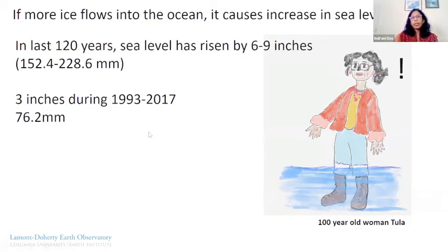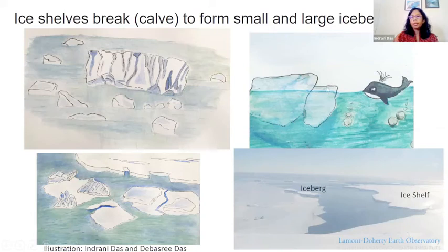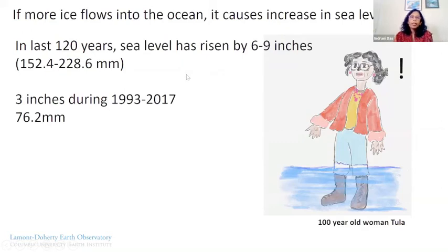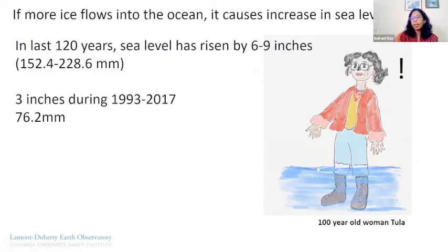Ice will melt and go to the ocean and increase sea level — that's called sea level rise. In the past 120 years, sea level has risen by six to nine inches — that's 152 to 228 millimeters. This sea level rise is not linear — the change is accelerating, which means it's becoming more and more. It doesn't increase linearly; it's a non-linear change. This is why scientists are monitoring how the ice sheet is changing.